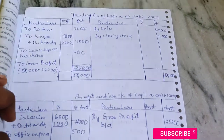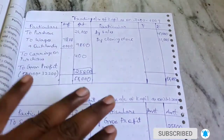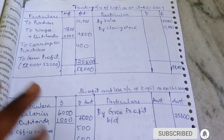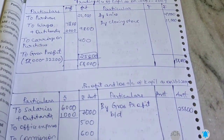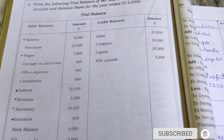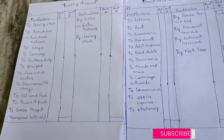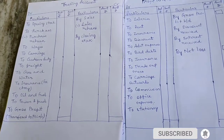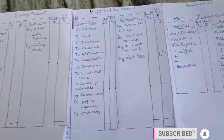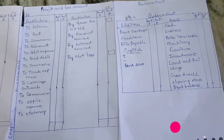These three accounts are compulsory. The format for Trading Account and P&L has Particulars and Amount columns. The Balance Sheet has Liabilities and Assets with two amount columns on both sides. These three formats are compulsory — take a screenshot.